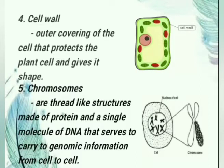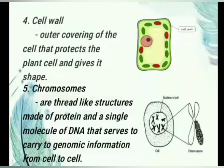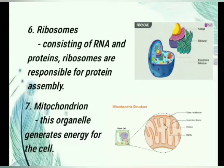Chromosomes are the things that make organisms what they are. They carry all the information used to help a cell grow, thrive, and reproduce. The chromosomes can be found inside the nucleus. Next is the ribosomes — consisting of RNA and proteins, ribosomes are responsible for protein assembly. They are the smallest membrane-bound organelles, comprising RNA and protein. They are the sites for protein synthesis, hence also referred to as the protein factories of the cell.